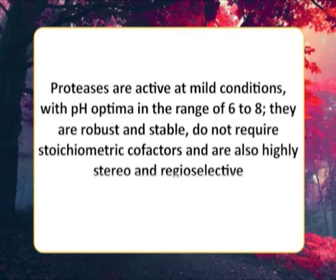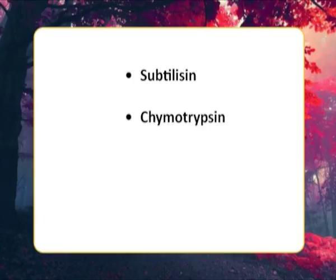Proteases are active at mild conditions with pH optima in the range of 6 to 8. They are robust and stable, do not require stoichiometric cofactors, and are also highly stereo and regioselective. These properties are quite relevant to use them as catalysts in organic synthesis. This is possible because proteases can not only catalyze the cleavage of peptide bonds but also their formation as well as other reactions of relevance for organic synthesis. For instance, the region-specific hydrolysis of esters and the kinetic resolution of racemic mixtures. Subtilisin, chymotrypsin, trypsin, and papain have been widely used proteases in the synthesis of peptides.